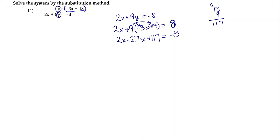Now I'm going to combine these two like terms. So positive 2x minus 27x is negative 25x. I'm going to bring down my plus 117 and my equals negative 8. Then I'm going to subtract 117 from both sides. That way I can combine my like terms.